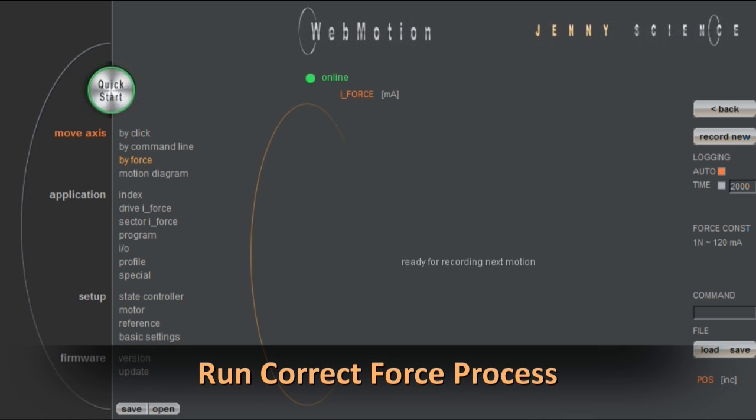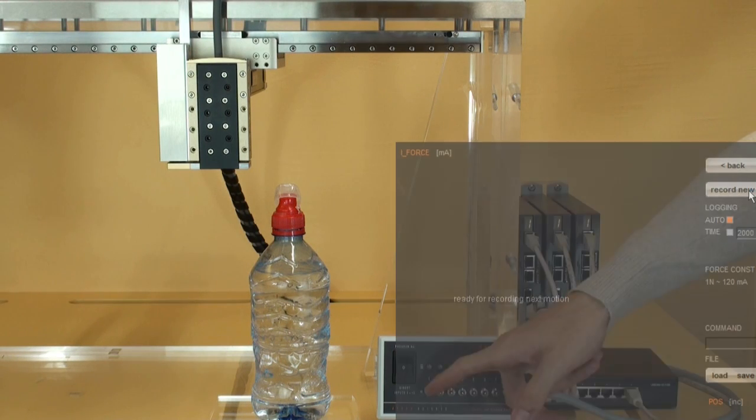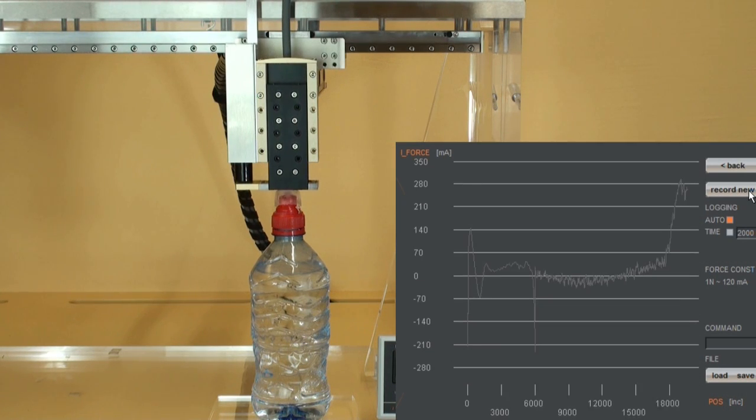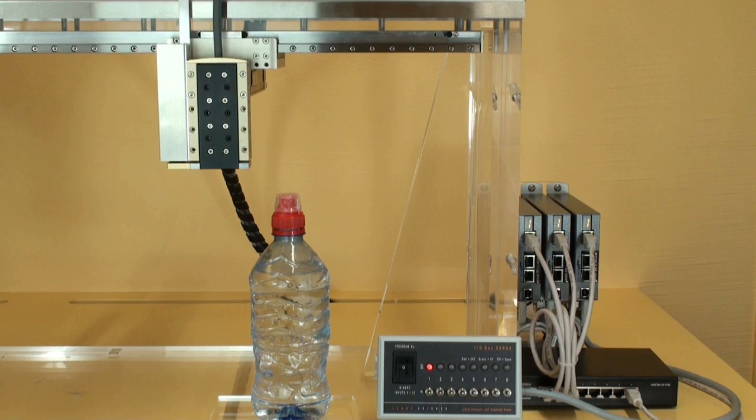Before we start the program, we can record the force-way diagram in our WebMotion user interface. As soon as we start the process by an input, the curve will be displayed in real time. We have programmed the result of the process to digital outputs, which are signaled by the LEDs on the I.O. box. Signal 1 means that the process was correct.